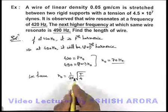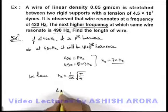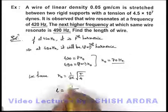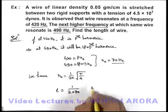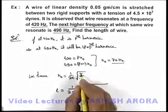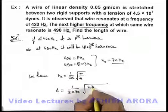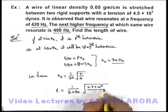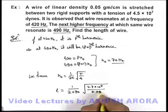If we substitute the values correspondingly, the length of string can be given as 1 by 2 times n-not, which can be written as 70, root of tension, which can be given as 4.7 into 10 to the power 7, divided by the linear mass density is 0.05.